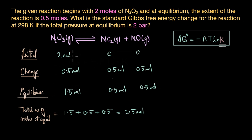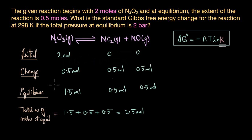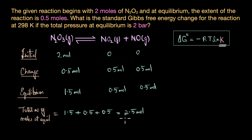It is already given that the reaction begins with 2 moles of N₂O₃, so the initial amount is 2 moles of N₂O₃ and the products are not yet formed. The change in concentration is represented by the extent of the reaction: 0.5 moles of N₂O₃ has reacted, giving 0.5 moles of NO₂ and 0.5 moles of NO. At equilibrium, the unreacted N₂O₃ is 2 − 0.5 = 1.5 moles, and 0.5 moles each of NO₂ and NO are formed. Adding them gives a total of 2.5 moles at equilibrium.